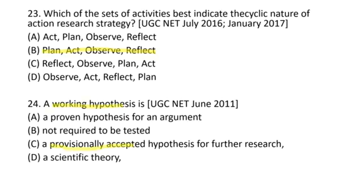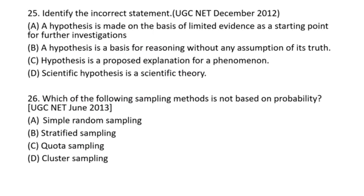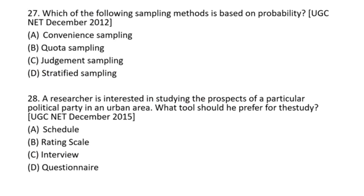The next question asks what is a working hypothesis. A working hypothesis is a provisionally accepted hypothesis for further research. The following question asks which sampling method is not based on probability, and after that, a researcher studying prospects of a particular political party in an urban area — what tool should be preferred? The answer is a rating scale.